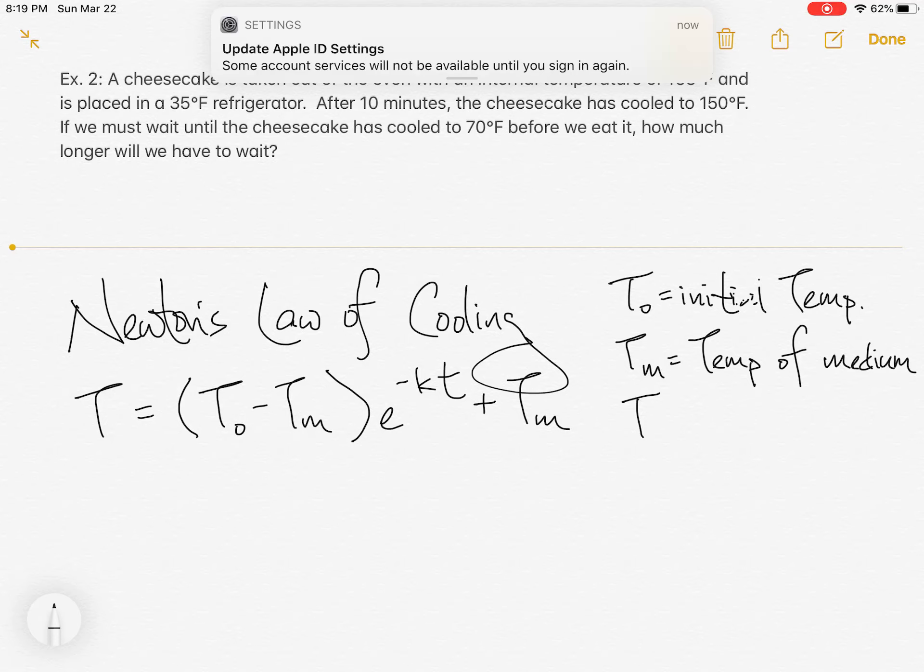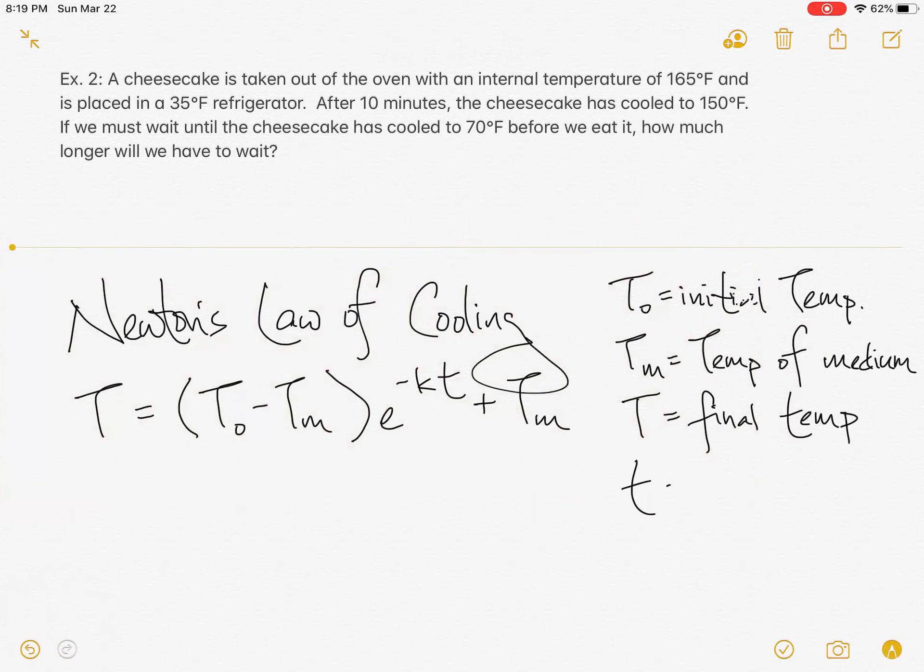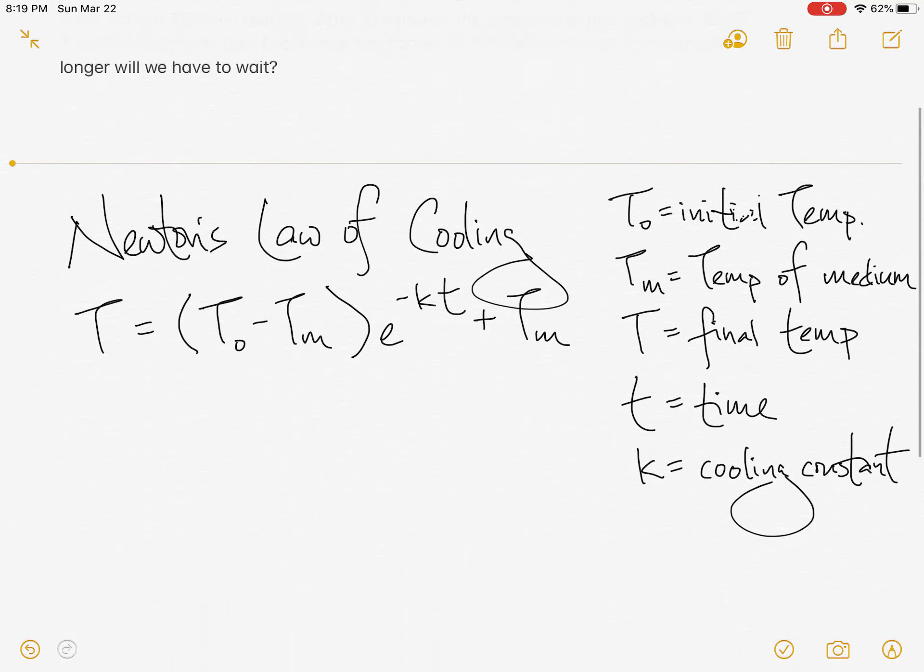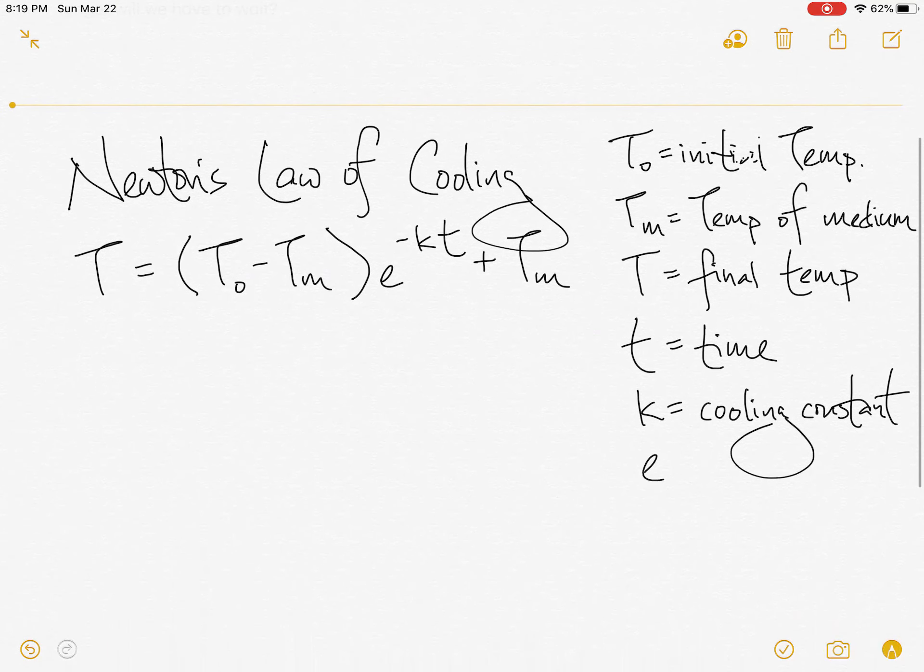The regular letter T is just our final temperature. Our lowercase t is time. k is the cooling constant, and e is our 2.718 ish.